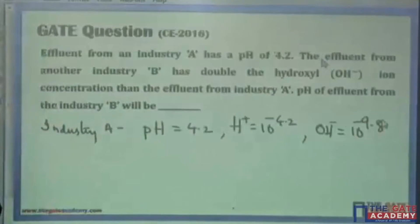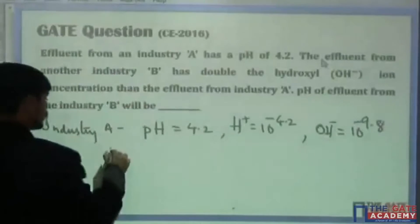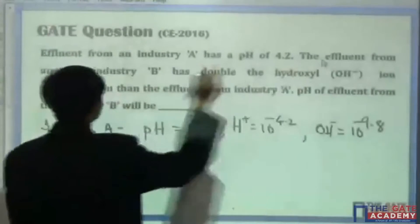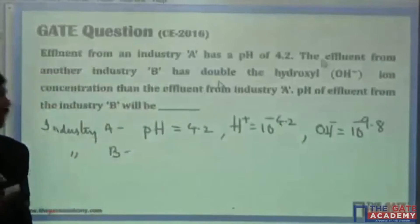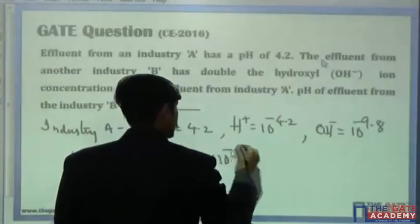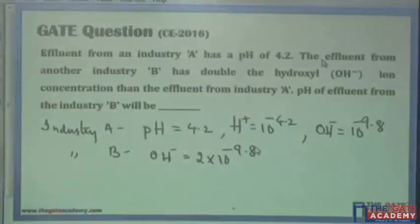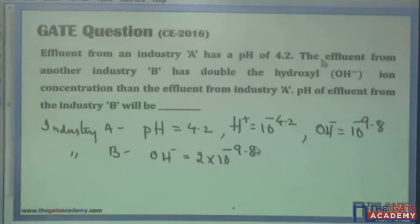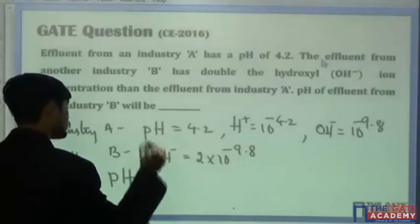Now there is another effluent from another industry — Industry B. The effluent from Industry B has double the hydroxyl ions. It means that here OH⁻ ions equals 2 times 10 to the power minus 9.8. We are supposed to find the pH of the effluent from Industry B.